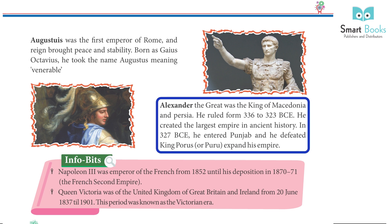6. Alexander the Great was the king of Macedonia and Persia. He ruled from 336 to 323 BCE and created the largest empire in ancient history. In 327 BCE, he entered Punjab and defeated King Porus, expanding his empire.